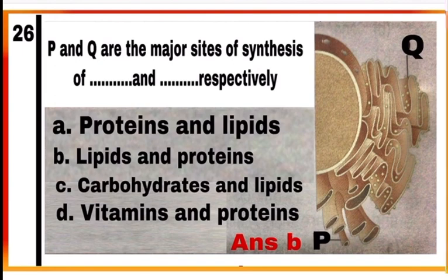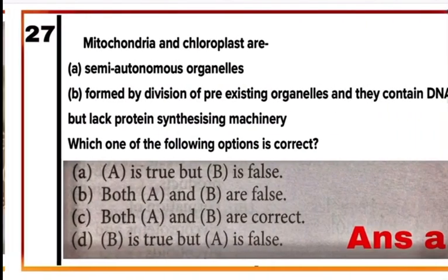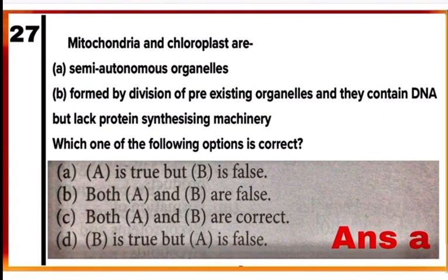Option B — lipids and proteins. In the figure, P represents smooth endoplasmic reticulum, which is the major site of lipid synthesis, while Q represents rough endoplasmic reticulum with ribosomes attached to it, actively involved in protein synthesis.